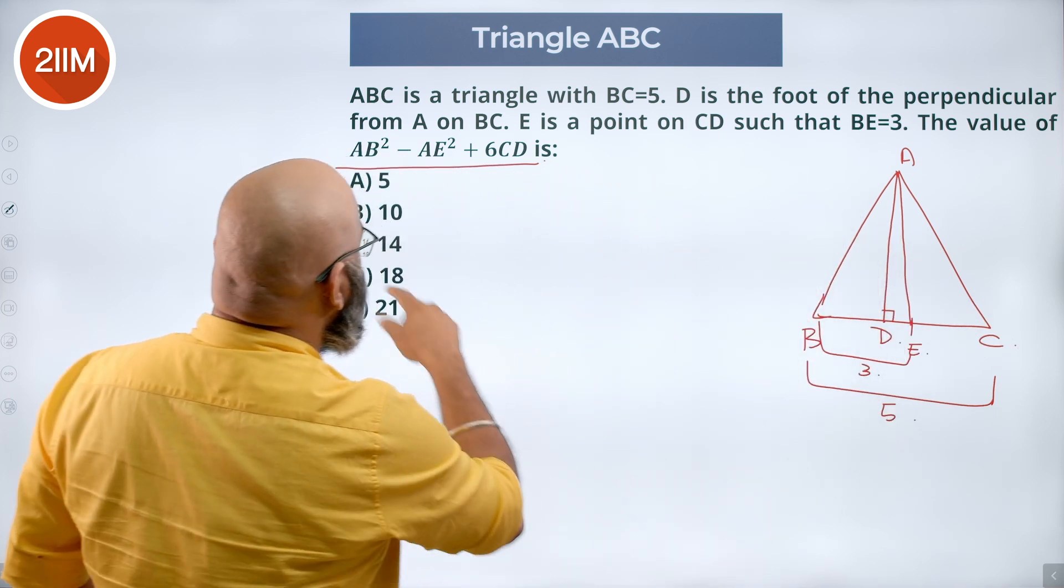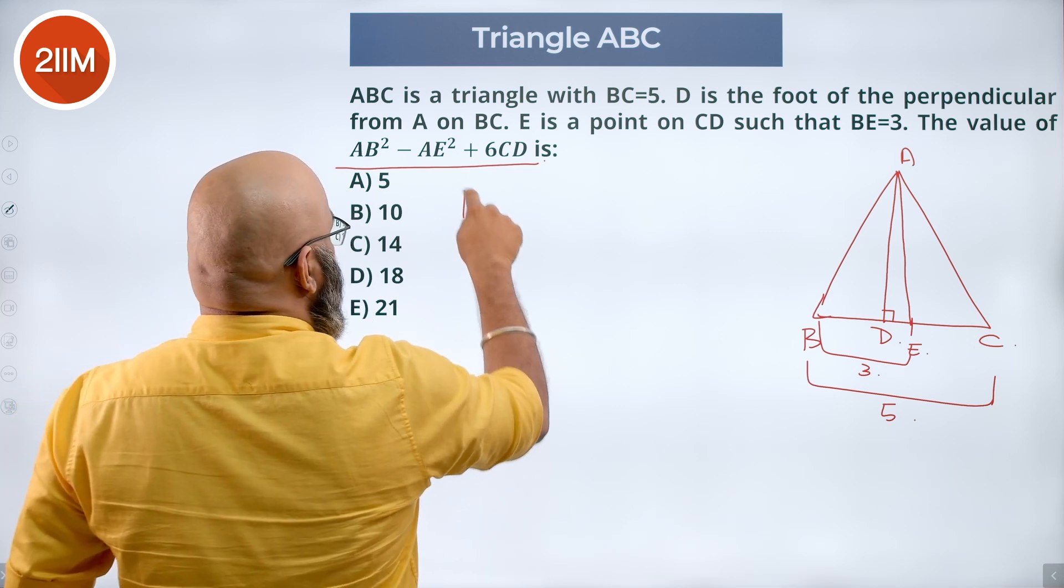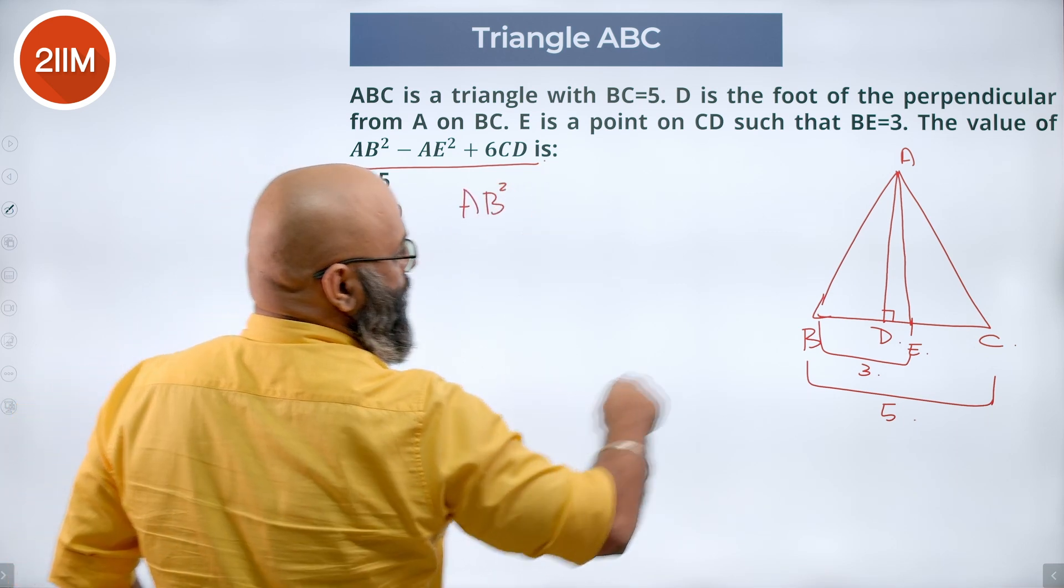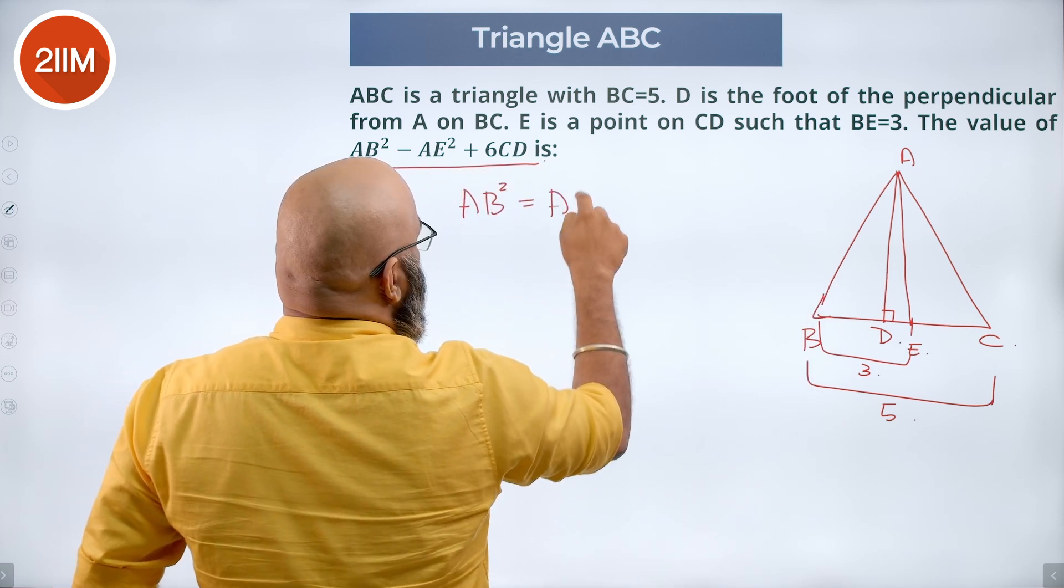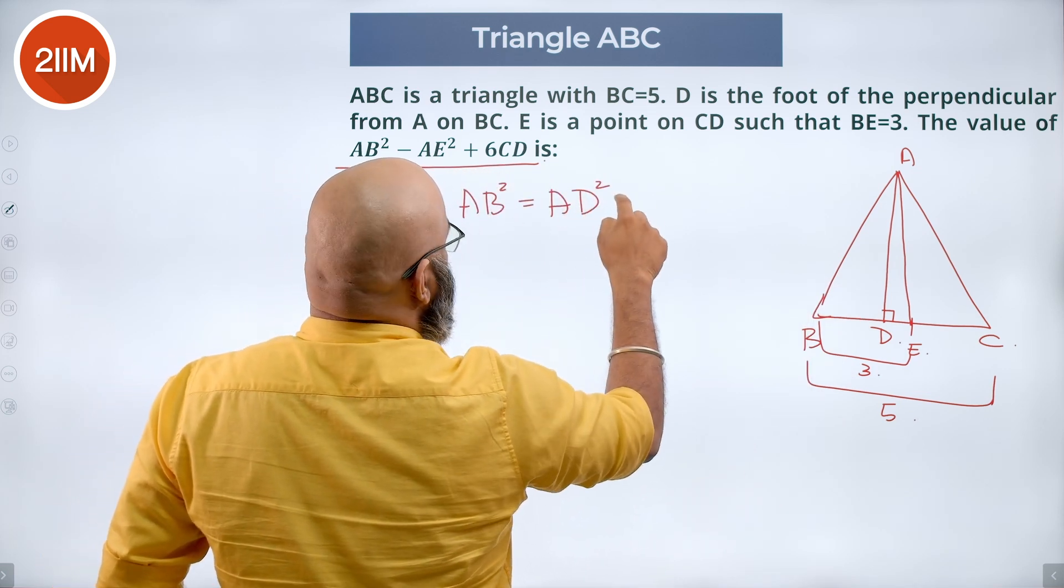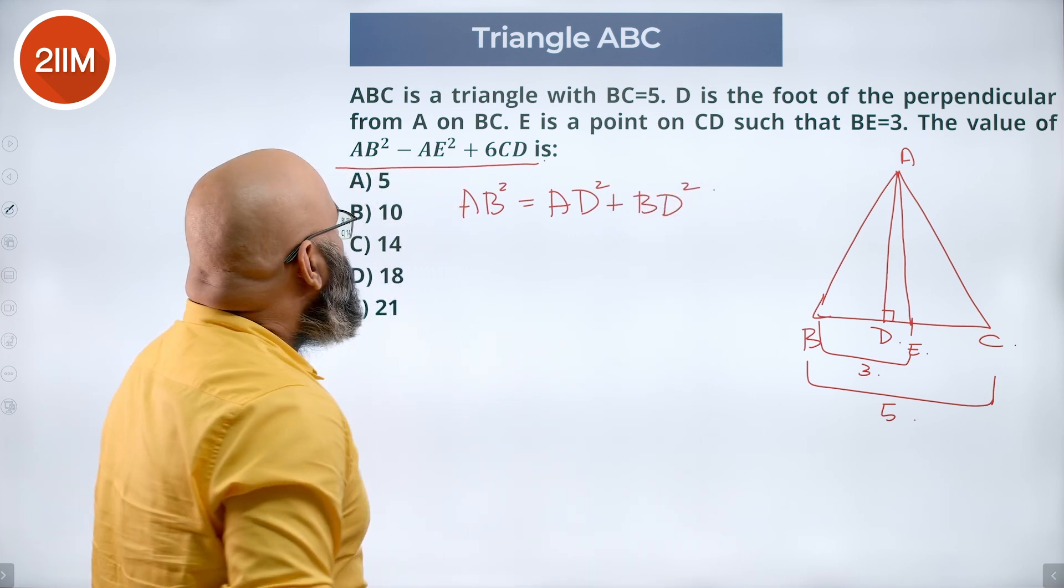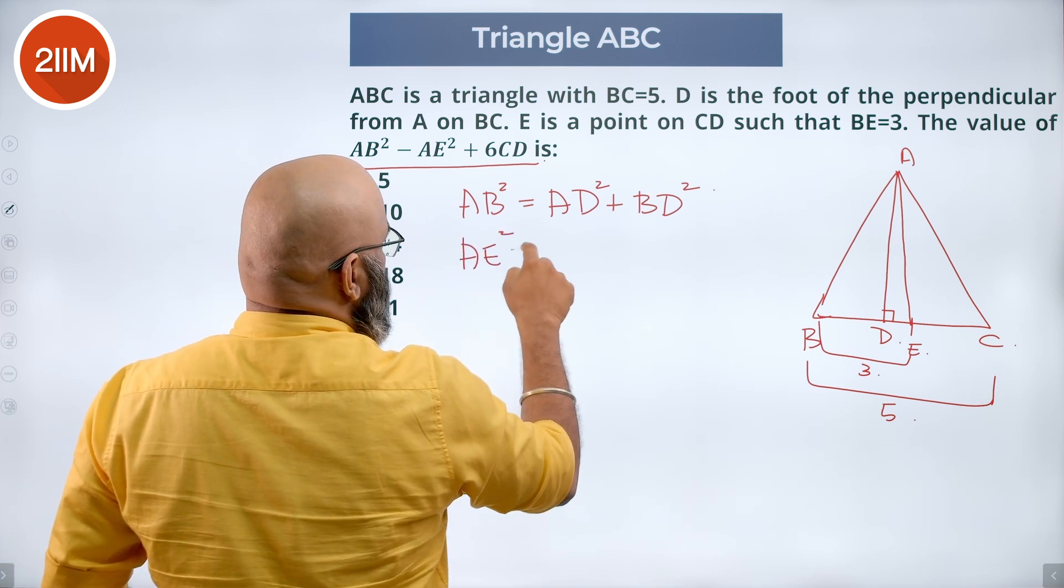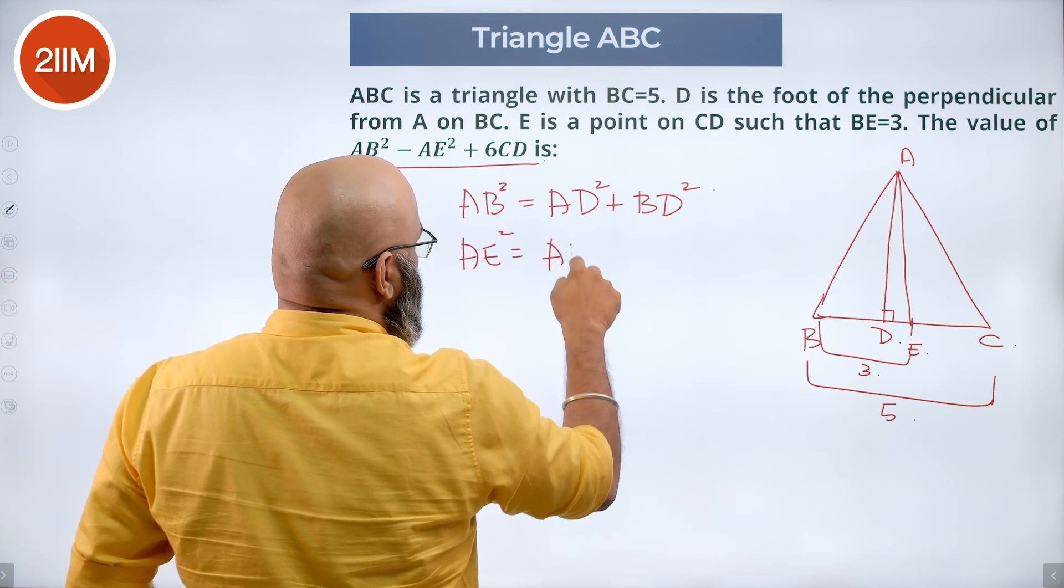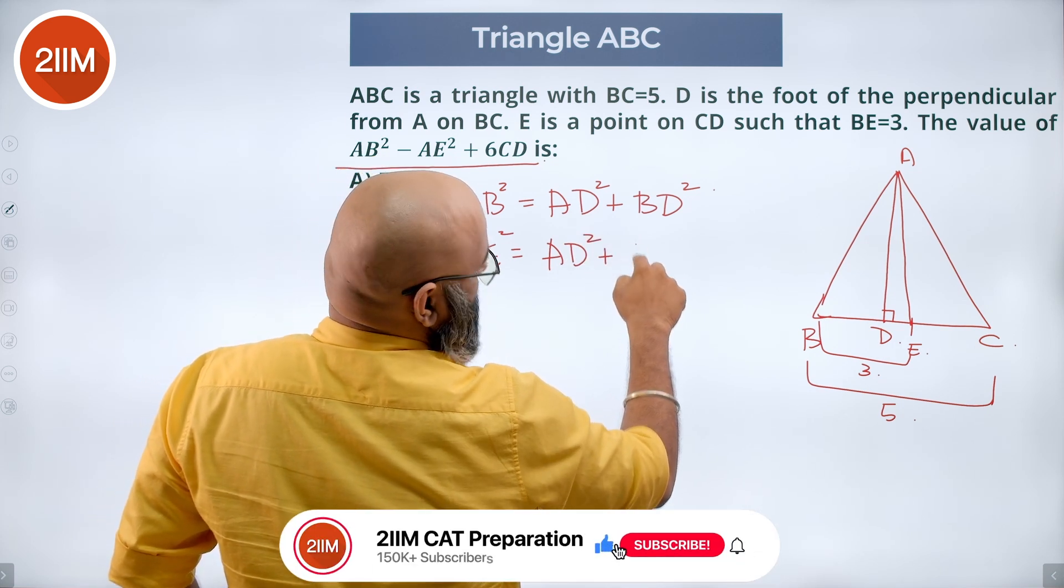Now I can bring AB square from there and also have AE square. So let's write AB square is the hypotenuse of ADB. So that gives you AD square plus BD square. And similarly we have AE square is equal to again AD square plus DE square.